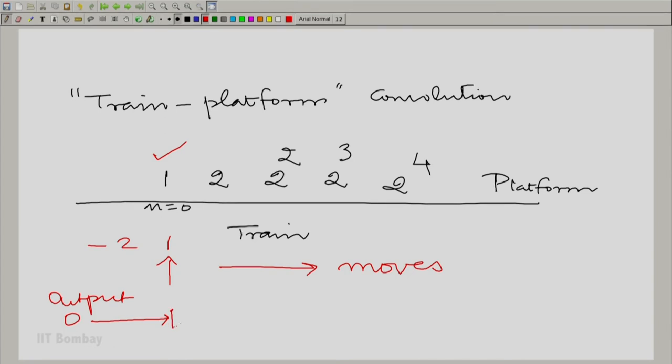At this point, it will be 1 into 2 minus 2 into 1 which is 0. At this point, it will again be 1 into 2 squared minus 2 into 2 which is 0. And you can see that you will get a 0 all afterwards. So, the output is simply delta(n).